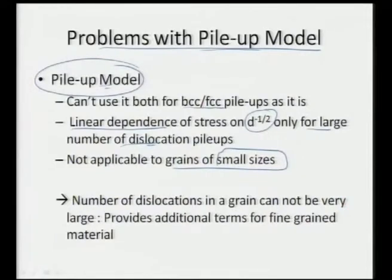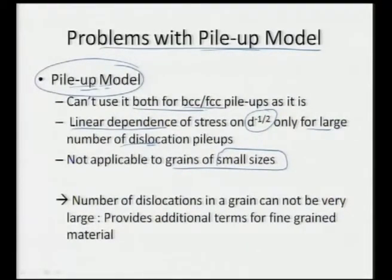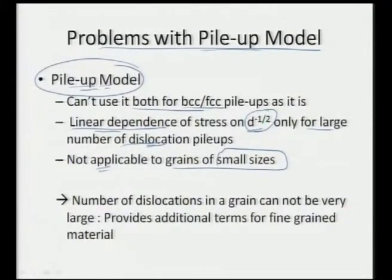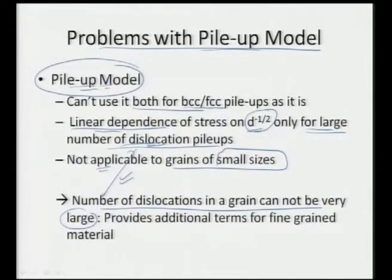Still we see an increase in yield stress which is responsible for enhanced strength of nanocrystalline material. The pile-up model — though we keep saying grain boundaries are acting as resistors or pinning agents — does not hold true for nanocrystalline material. First, the pile-up model cannot be utilized for both FCC or BCC types. Second, the linear dependence of stress on d^(−1/2) only holds for a large number of dislocation pile-ups, and as we reduce grain size we have only very few dislocations in a nanocrystalline grain.